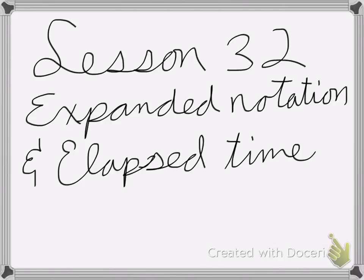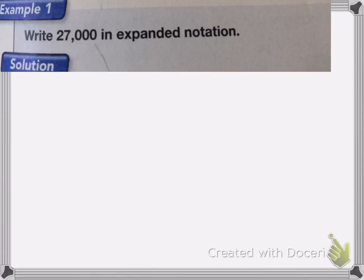Alright, so lesson 32 is on expanded notation and more on elapsed time. Our first one is write 27,000 in expanded notation. To do this, we need to write out the different place values.